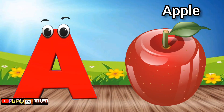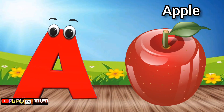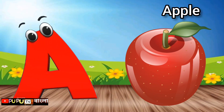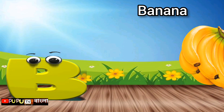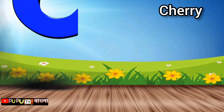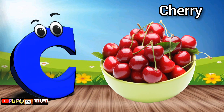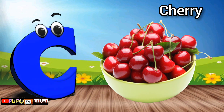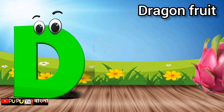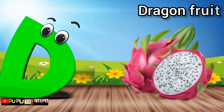A is for Apple, A-A-Apple. B is for Banana, B-B-Banana. C is for Cherry, C-C-C-Cherry. D is for Dragon Fruit, D-D-Dragon Fruit.